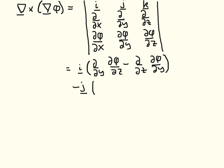so that's d by dx acting on d phi dz, minus d by dz acting on d phi dx, close the brackets.